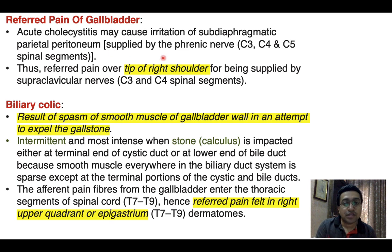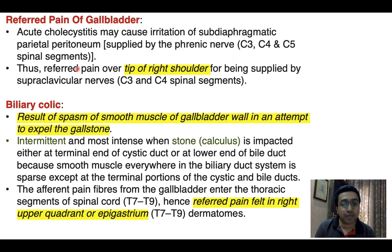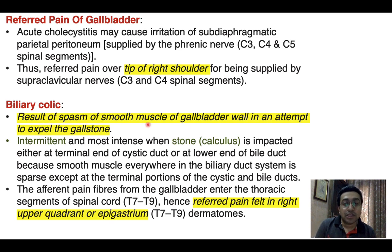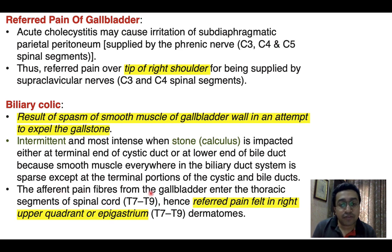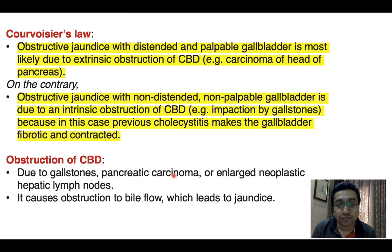Acute cholecystitis may cause irritation of the subdiaphragmatic parietal peritoneum, supplied by the phrenic nerve (C3, C4, C5 spinal segments), thus referred pain is felt over the tip of the right shoulder, supplied by supraclavicular nerves at C3 and C4. Biliary colic is pain resulting from the spasm of smooth muscle of the gallbladder wall in an attempt to expel a gallstone. It is intermittent and most intense when the stone is impacted at the terminal end of the cystic duct or the lower end of the bile duct. Afferent pain fibers enter thoracic segments T7 to T9, so referred pain is felt in the right upper quadrant or epigastrium.